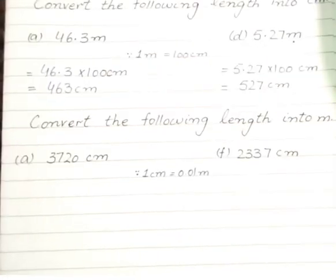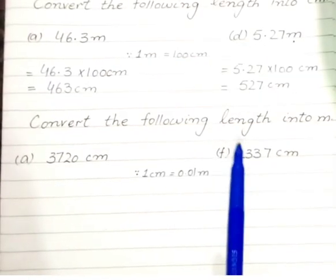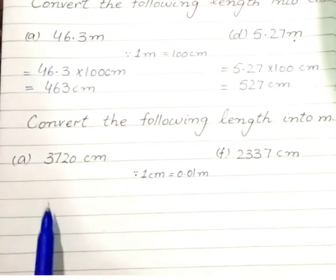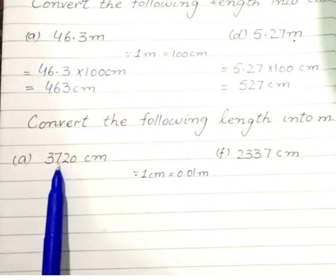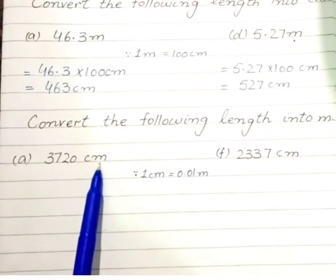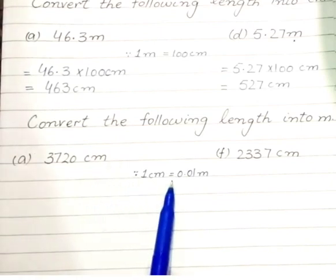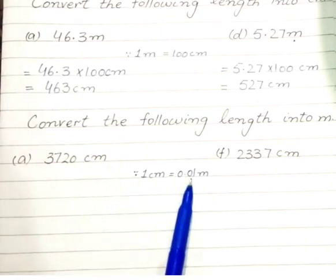Let's now convert the length into meter. The first question is 3,720 cm. We know that 1 cm is equal to 0.01 meter.